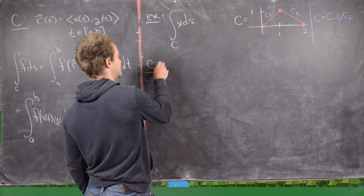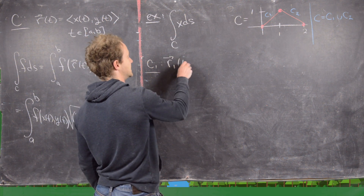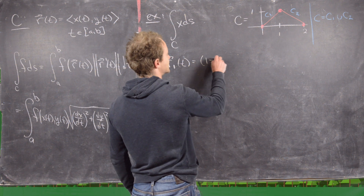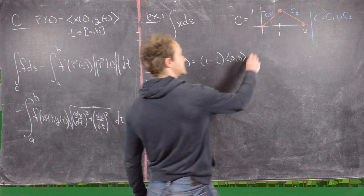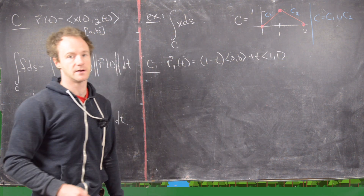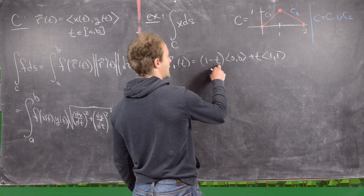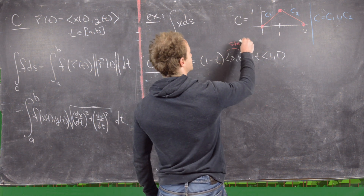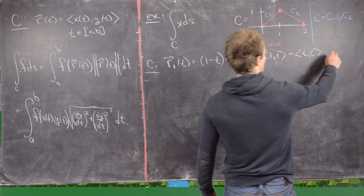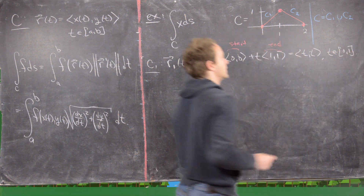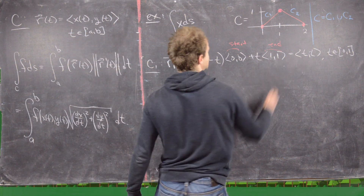C1 can be parametrized as r1(t) = (1−t) times the starting point, which is the origin, plus t times the ending point, which is (1,1). This is a nice parametrization trick for any line segment: (1−t) times the start plus t times the end, which always gives a parametrization where t is on the unit interval from 0 to 1. In this case it simplifies to just (t, t).